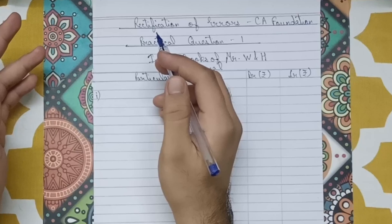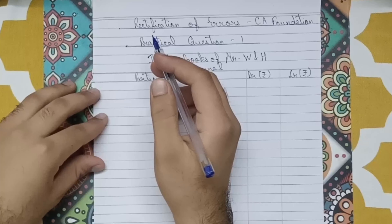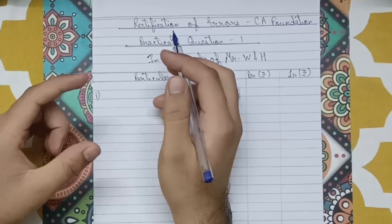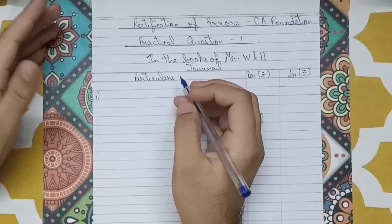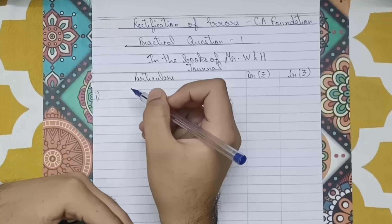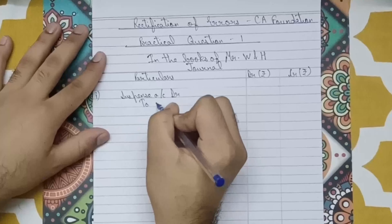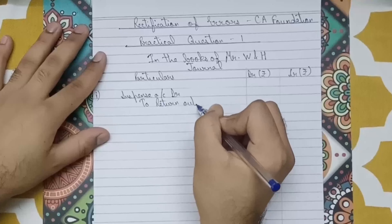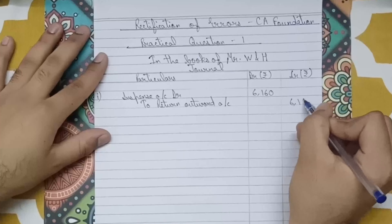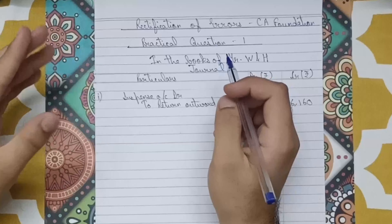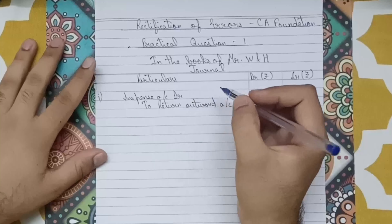Point one: The purchase returns daybook had been correctly entered and totalled at 6,160 but had not been posted to the ledger. So we are going to post it to the ledger. The journal entry will be: Suspense Account debit to Return Outwards account, amount 6,160. Narration is not required as per the question.